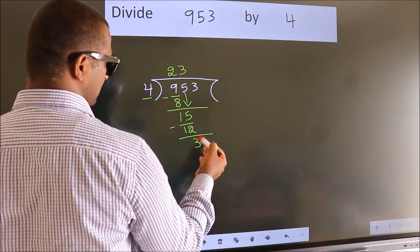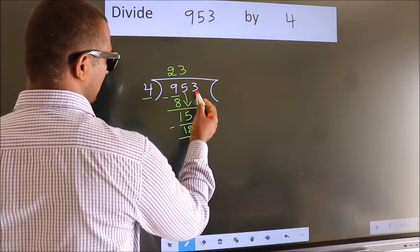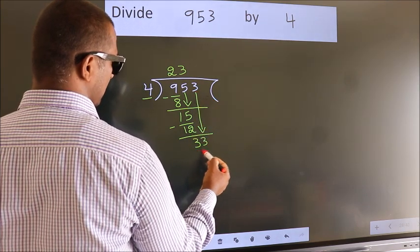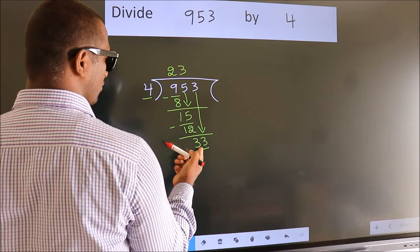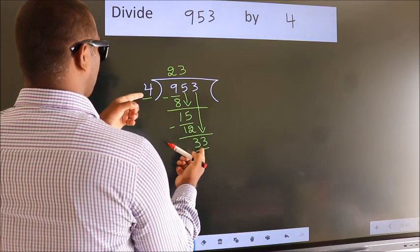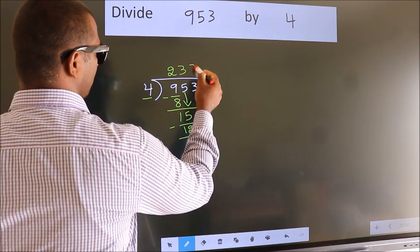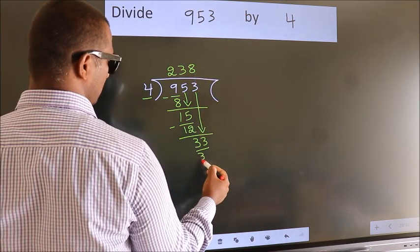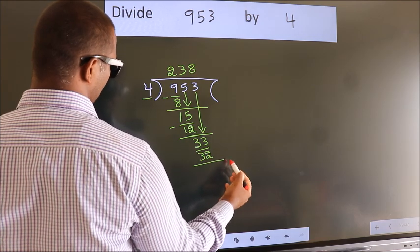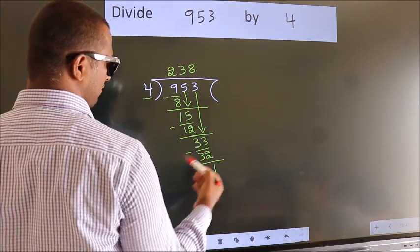After this, bring down the beside number. So, 3 down. So, 33. A number close to 33 in 4 table is 4 eighths, 32. Now, we subtract. We get 1.